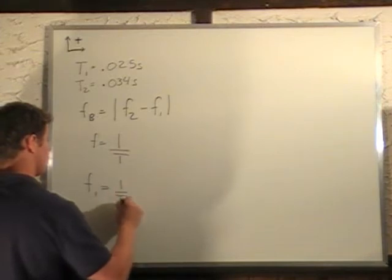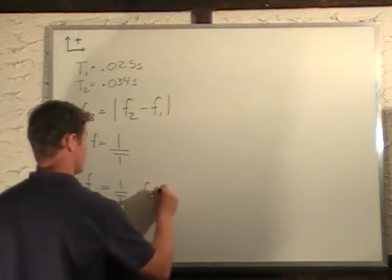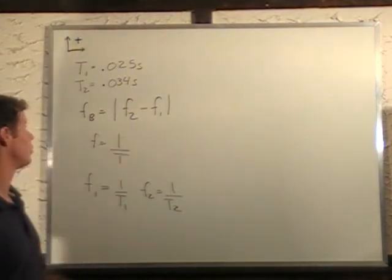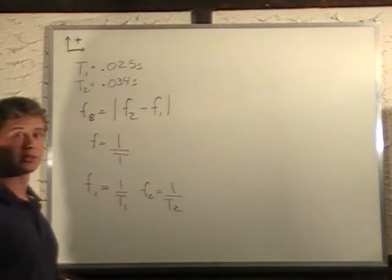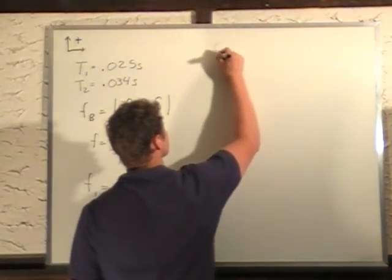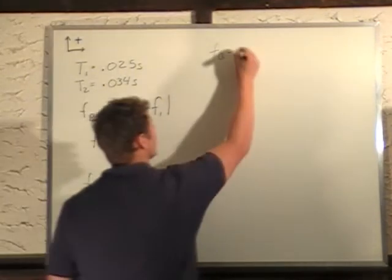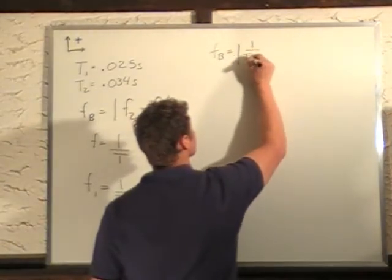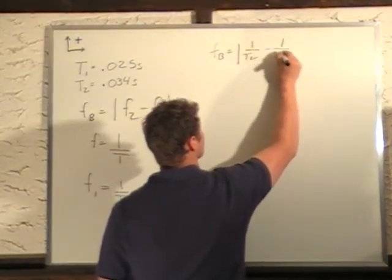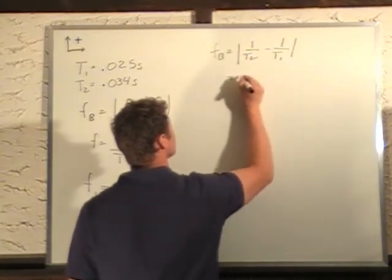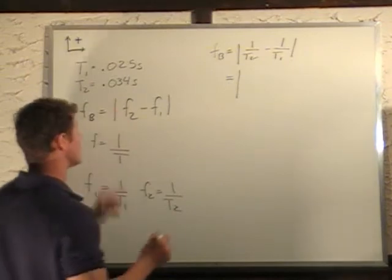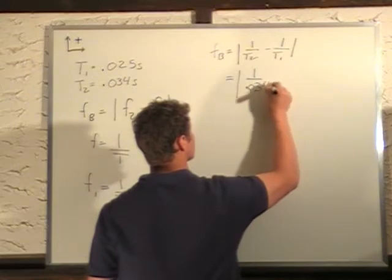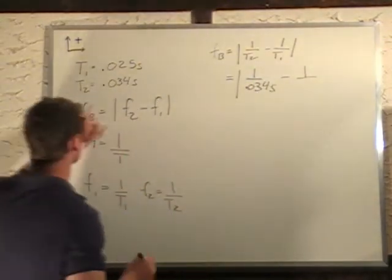So f1 equals 1 over t1, and f2 equals 1 over t2. The beat frequency equals the absolute value of f2 minus f1, which is 1 over t2 minus 1 over t1. Plugging in the numbers: t2 is 0.034 seconds and t1 is 0.025 seconds.